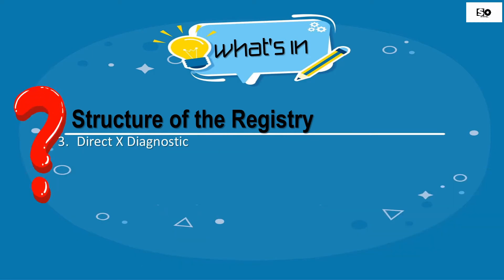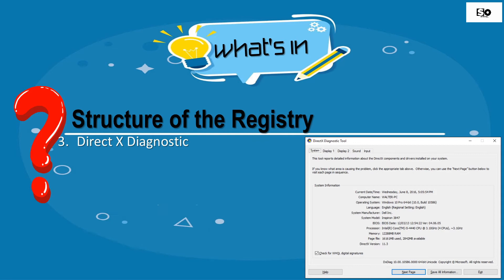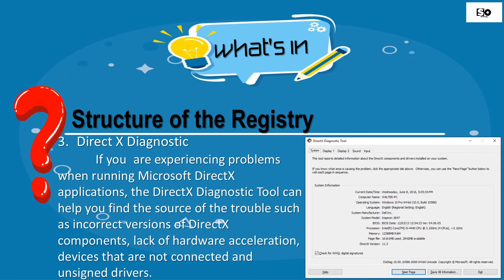The third topic is the DirectX Diagnostic tool. The Microsoft DirectX Diagnostic tool provides you with information about the DirectX API components and drivers on your system. It enables you to test sound and graphics output and Microsoft DirectPlay service providers. If you are experiencing problems running a Microsoft DirectX application, the DirectX Diagnostic tool can help you find the source of trouble, such as incorrect version of DirectX components, lack of hardware acceleration, devices that are not connected, and unsigned drivers.